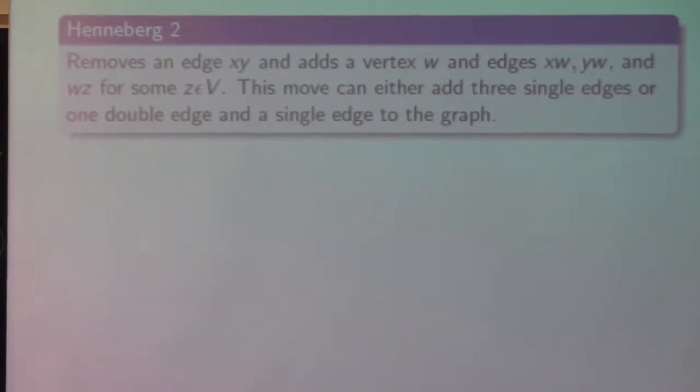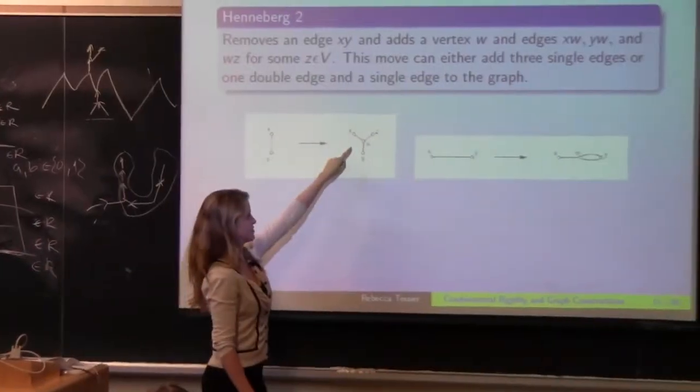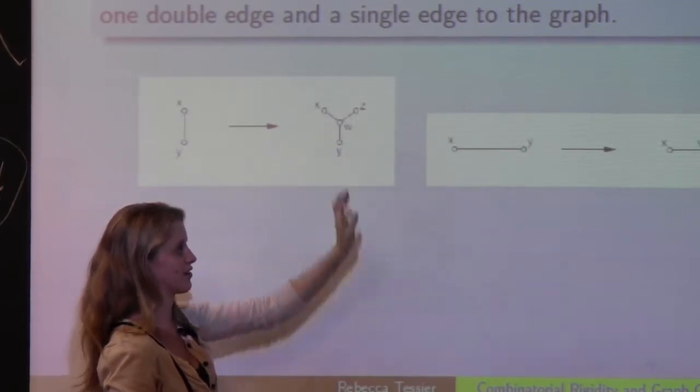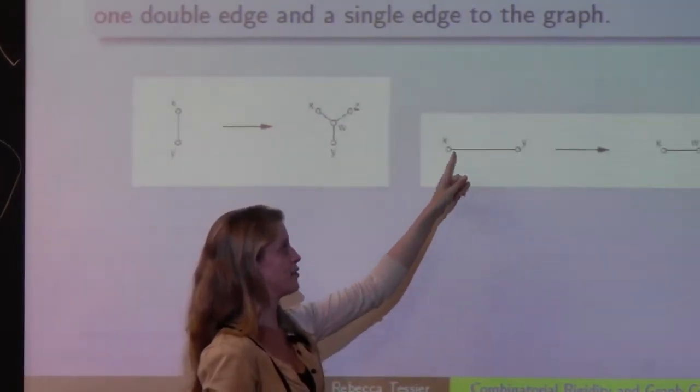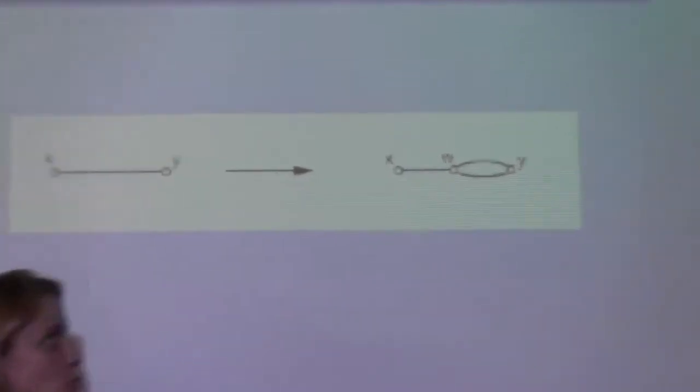So Henneberg 2 move, this move removes an edge XY and adds a vertex W with three adjoining edges. So this move can either add three single edges or a double edge and a single edge. The only stipulation on this is you don't add a triple edge, because when you're removing it as well, you'd end up with a loop, so it's not going to allow for the set of loop-less graphs. So for example here, we removed this edge XY, and we've added in this vertex W and edges XW, WY, and WZ for some Z in the graph. And here we've removed this edge and added in this W and XW and two edges WY.